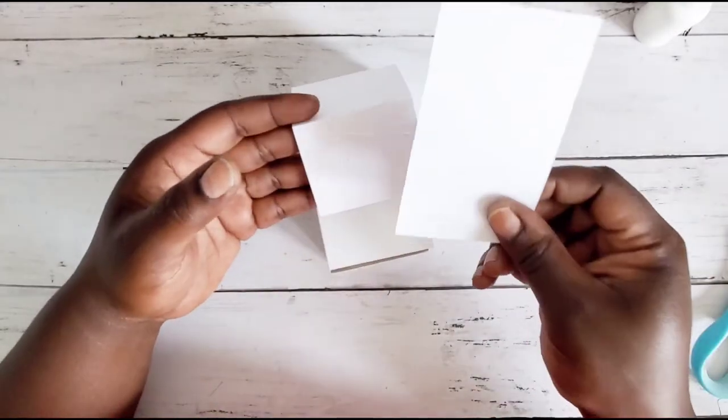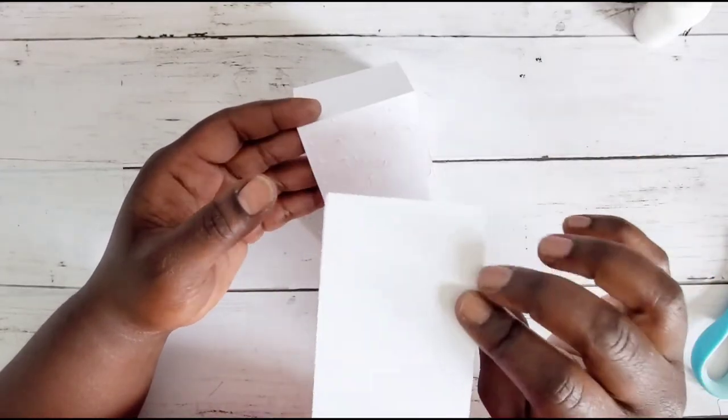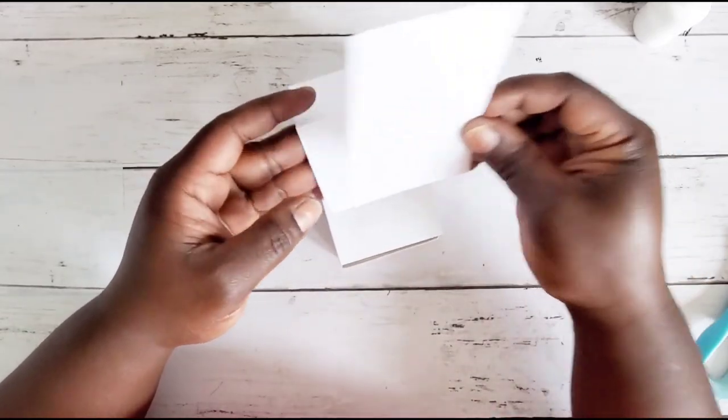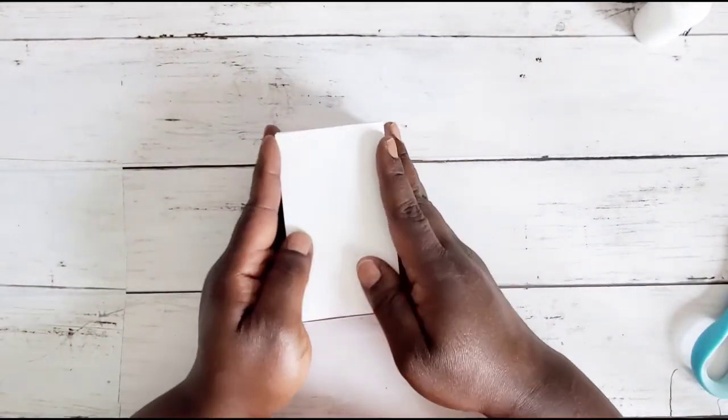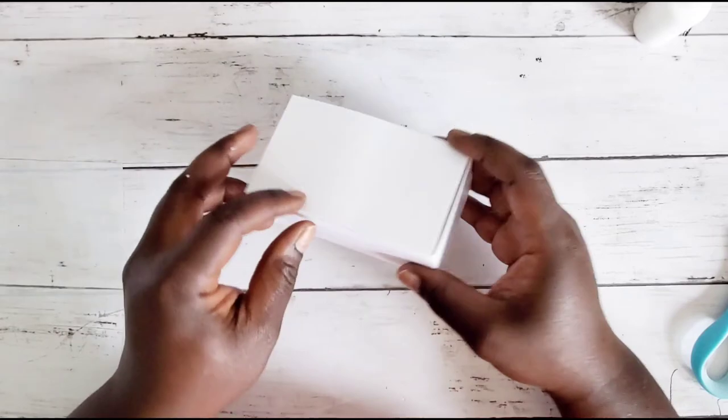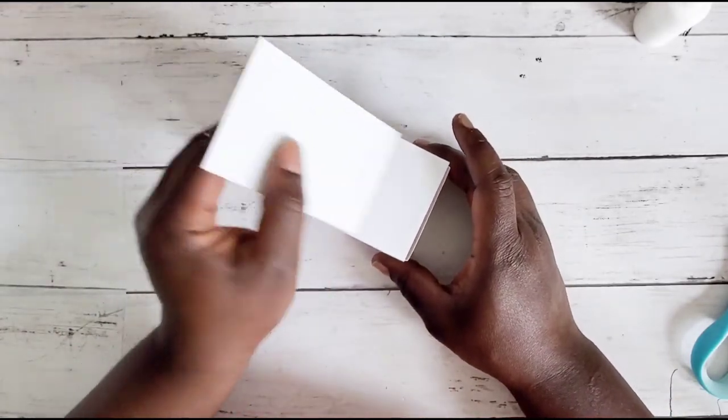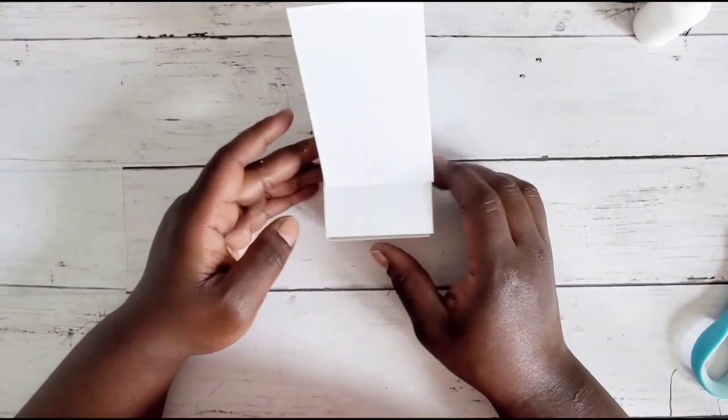And then we're going to take our other piece, the one that we did not score, and we're going to apply it from the bottom onto the area that we just glued. And then that is the construction of the box.